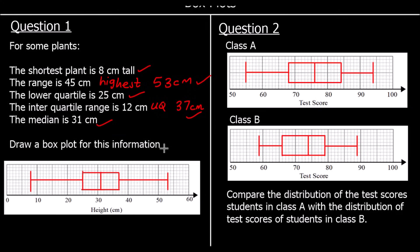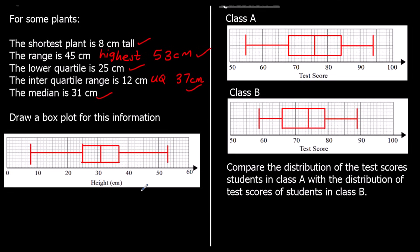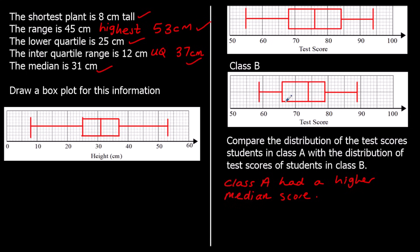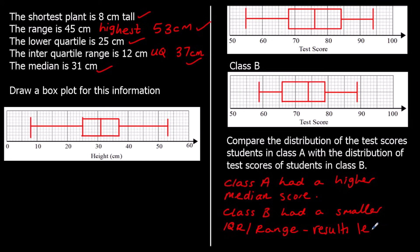Question two, we're comparing two classes' test results — so comparing two box plots. We compare the average and the spread. Class A had a higher median score. For the spread, the interquartile range and range are both smaller for class B. So class B had a smaller interquartile range or range, meaning the results are less spread out.